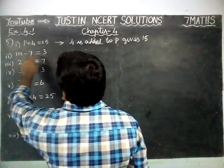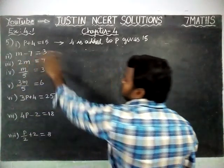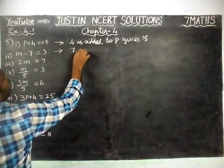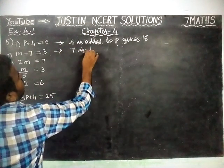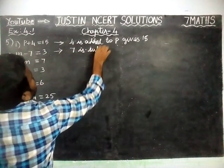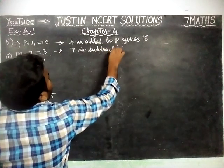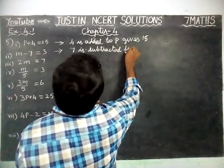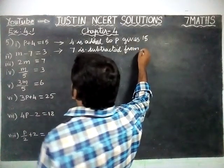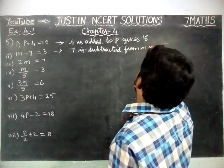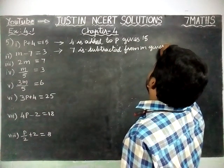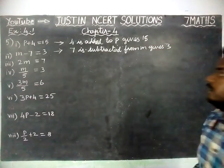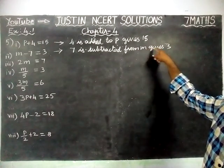2nd question: M minus 7 is equal to 3. 7 is subtracted from M gives 3.